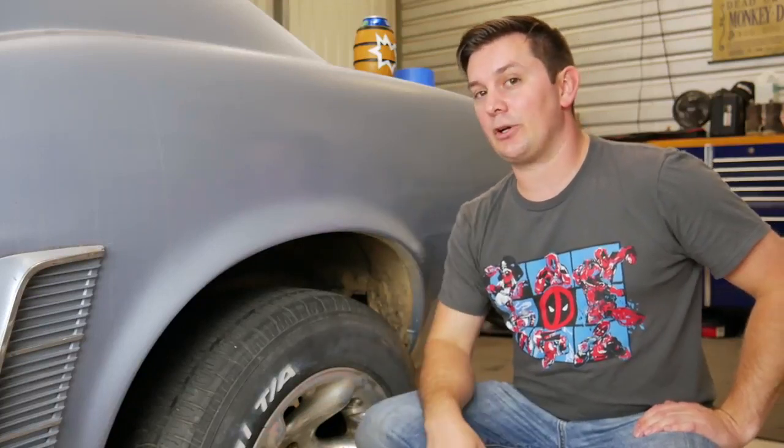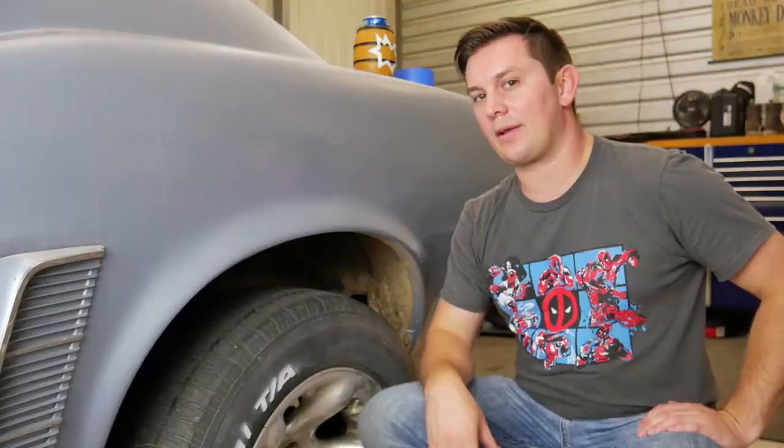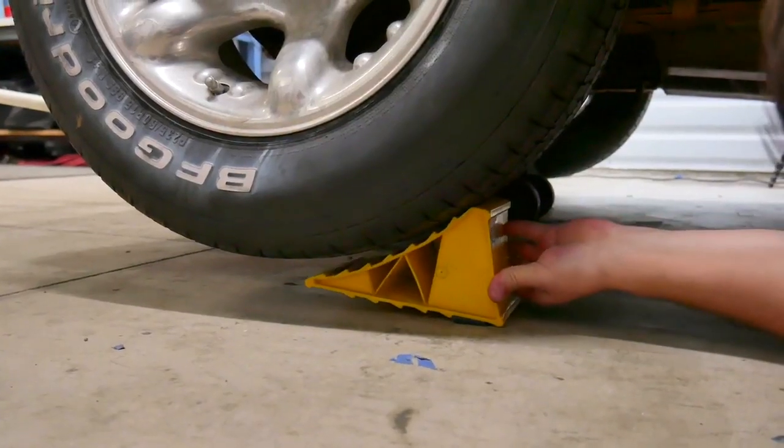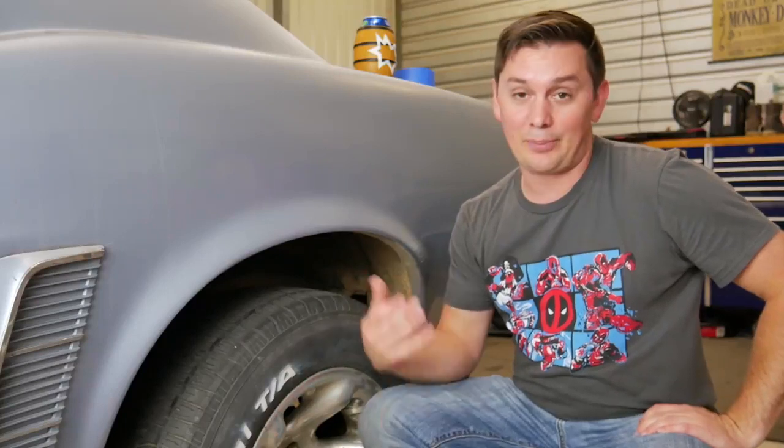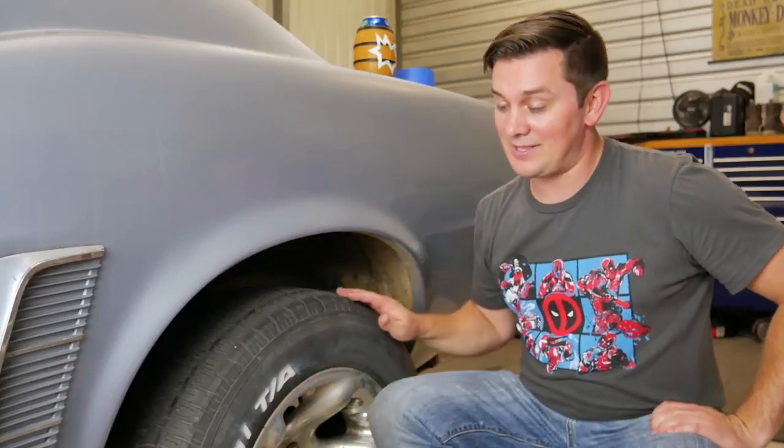You're going to need to make sure you chalk the other tire. The other rear tire can't spin at all. If it spins it's going to throw off your calculations. So I put a chalk on that side. I already tested it.